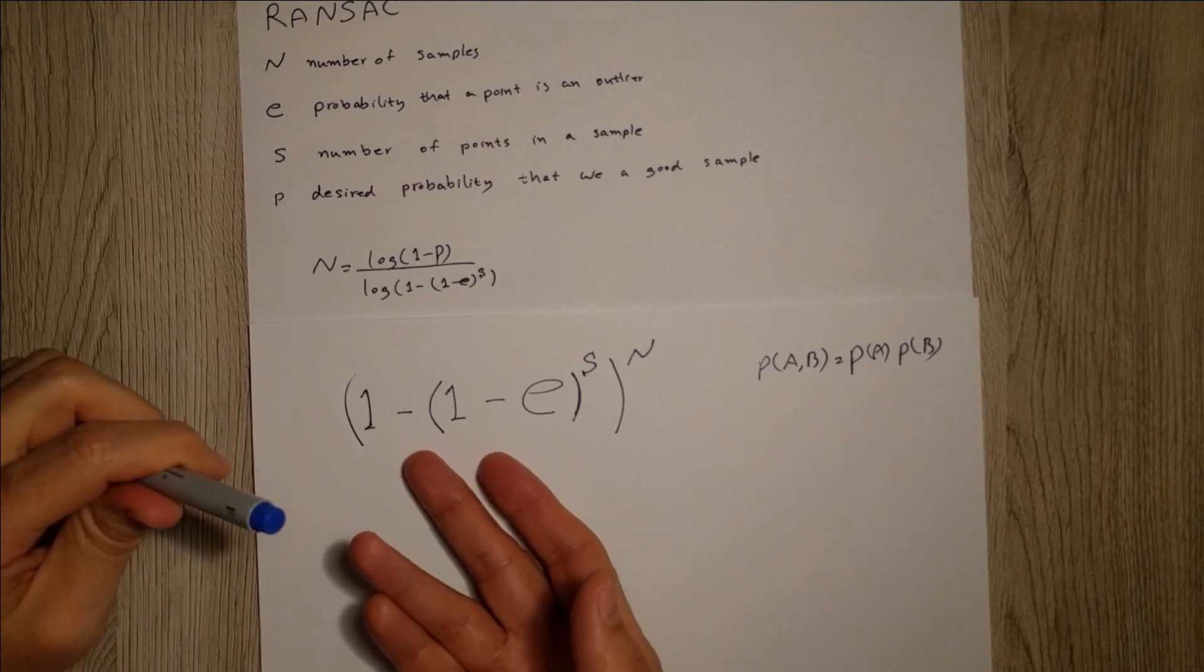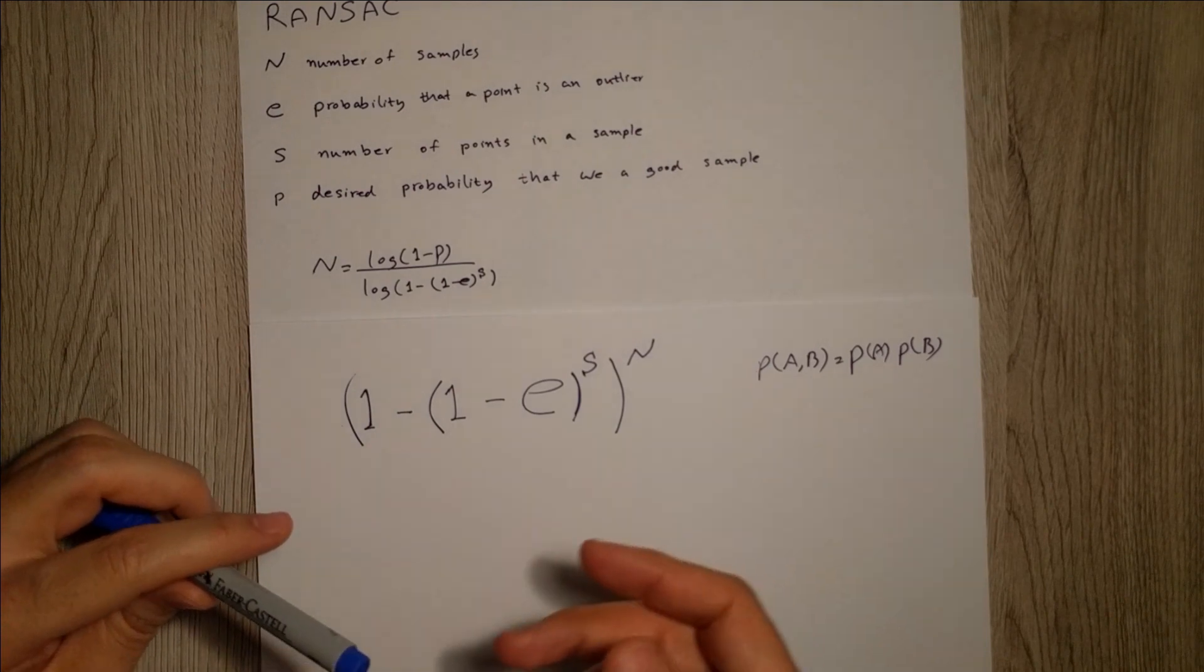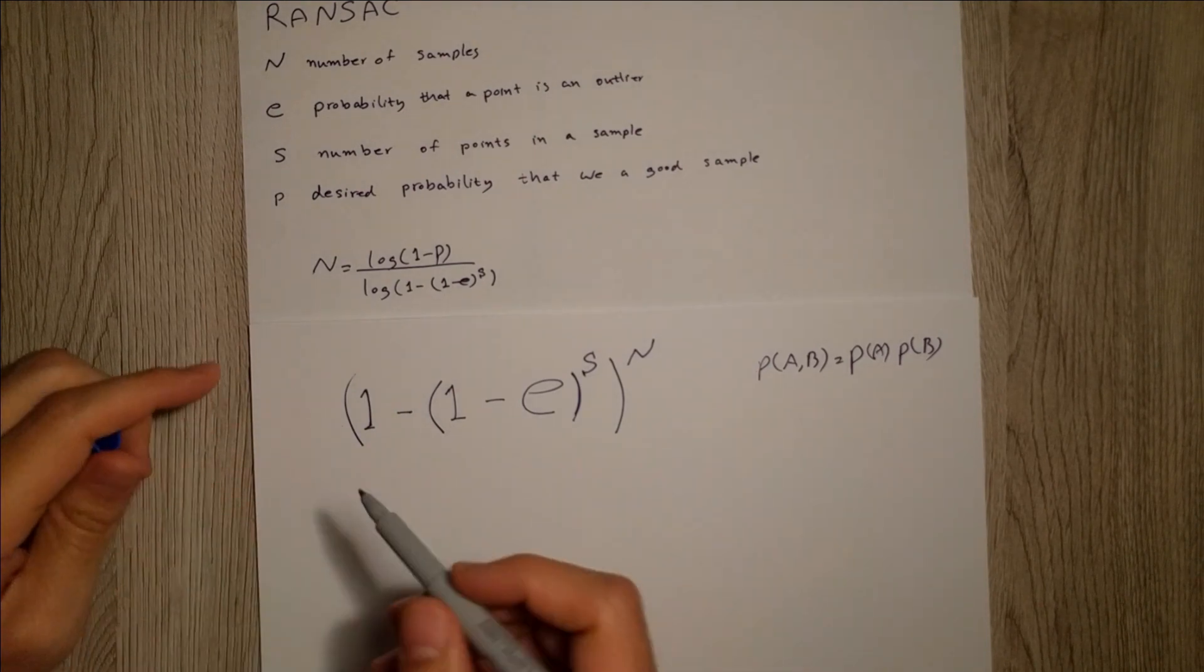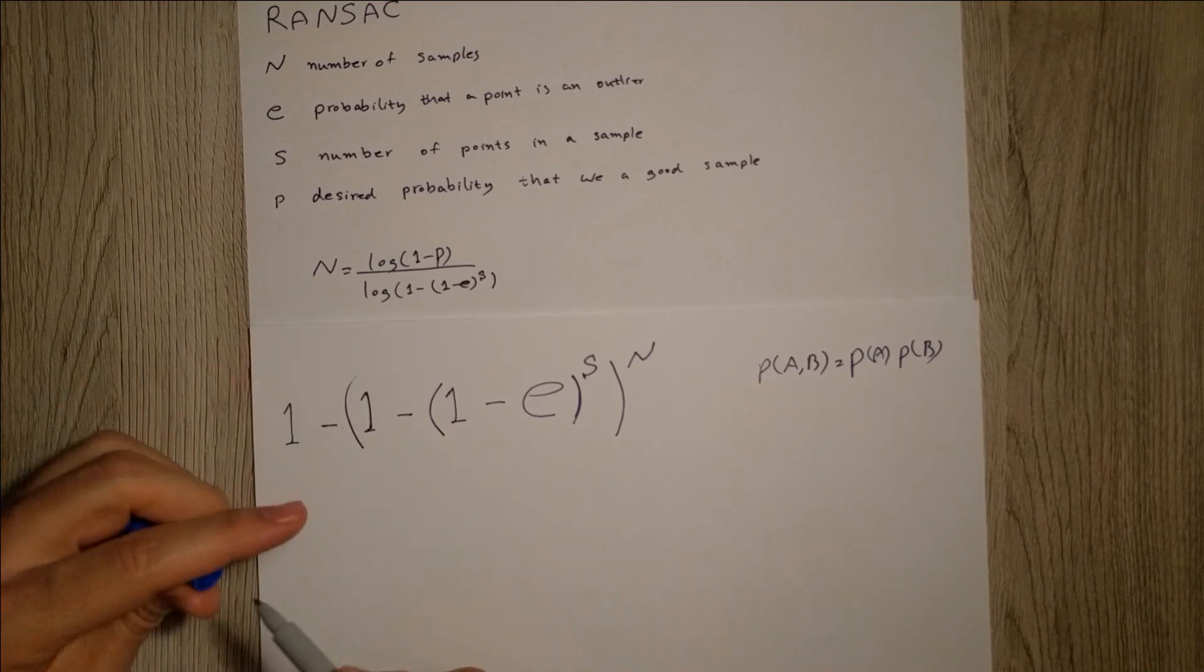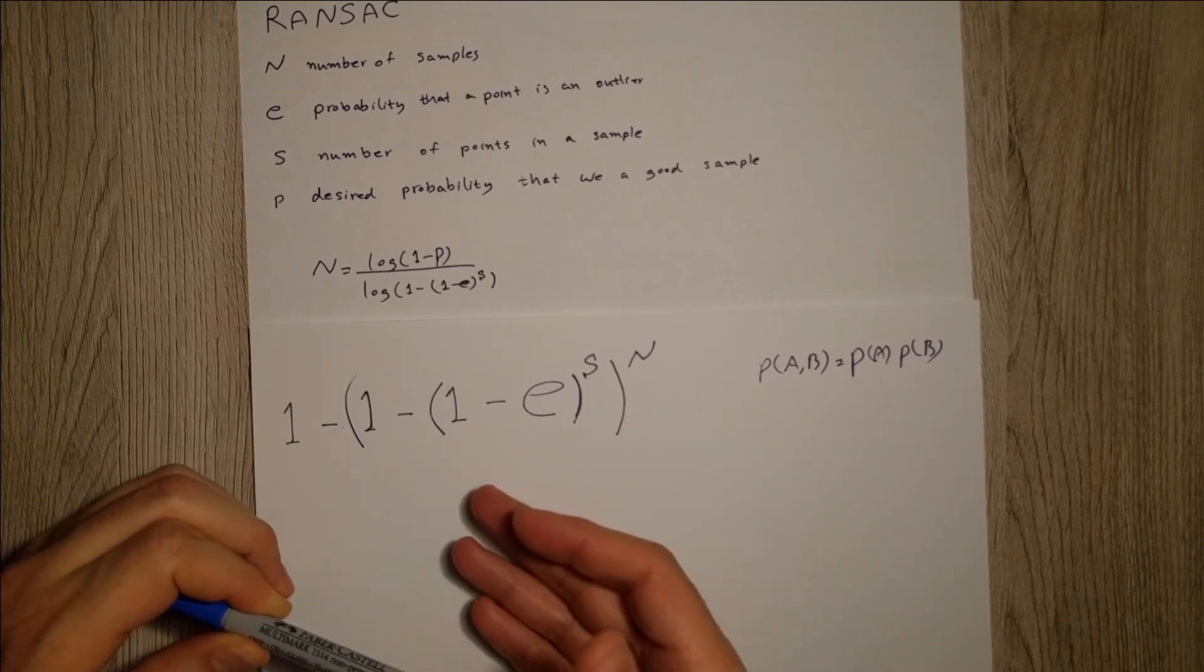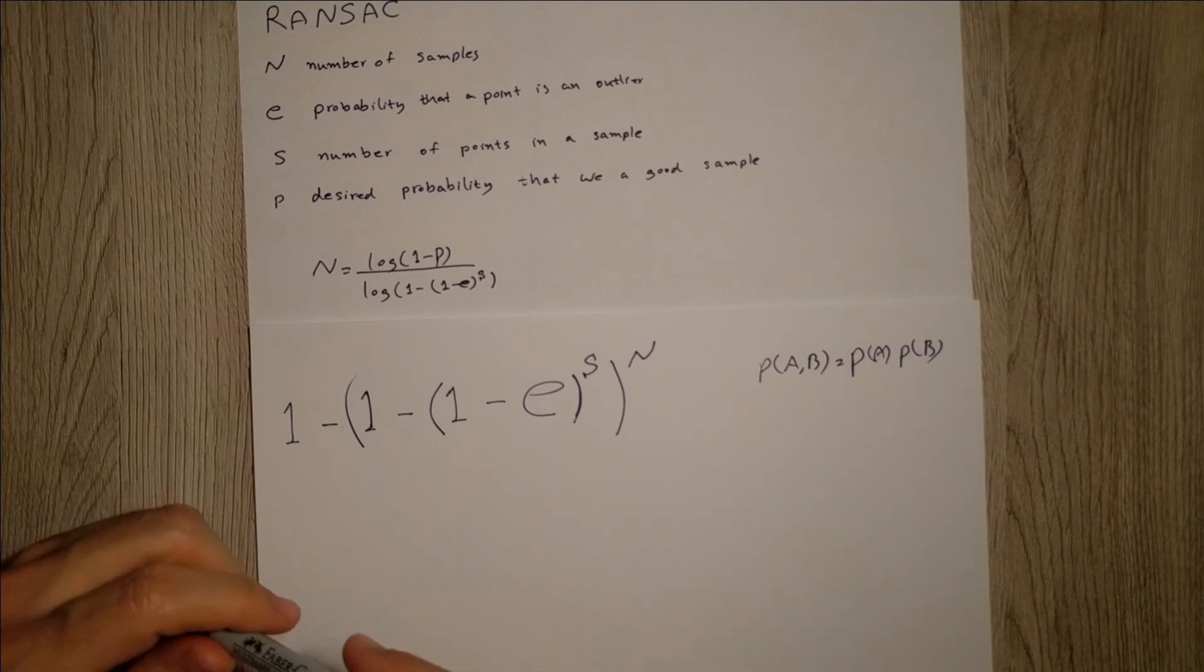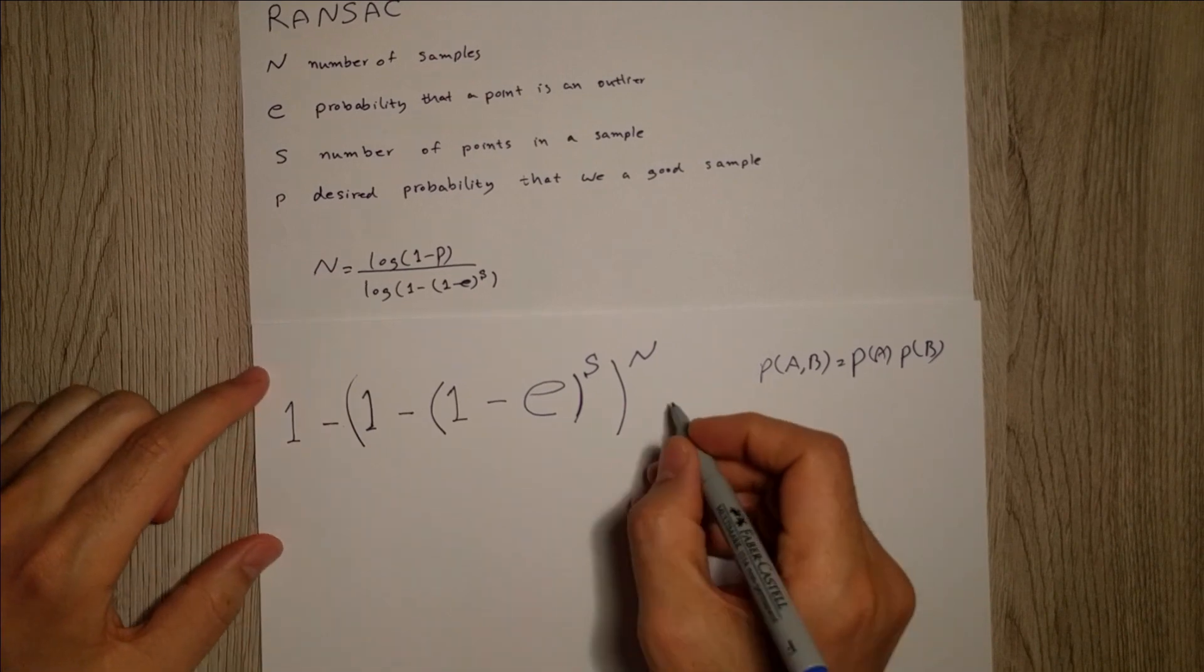What is the complement for this probability? The probability that we have chosen N samples and not all of them are contaminated. That means there is at least one inlier in our data. This is the P that we are looking for.